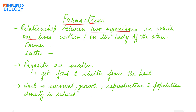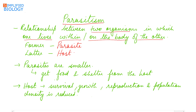Parasitism is a relationship between two organisms in which one organism either lives within or upon the body of the other organism. The one which lives within or upon the body is referred to as the parasite, and the other on which the parasite grows or lives is known as the host.